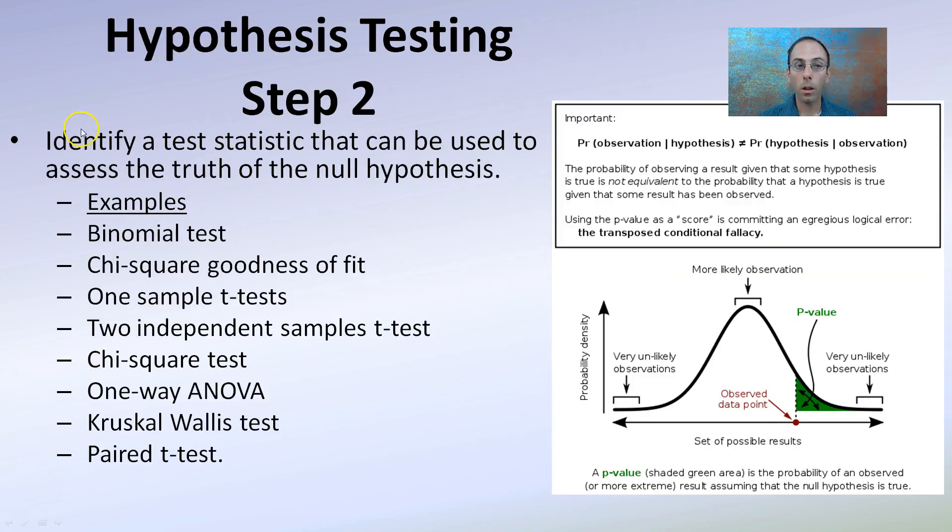Step two is using statistical tests to determine whether or not the null hypothesis will hold true. There's many different types here. If you take a stats course, you'll get into them in more detail. Binomial tests, one-sample t-test, chi-square tests, one-way ANOVAs, things like that. These are all tests that are used to help determine the likelihood or unlikelihood of a result being true.